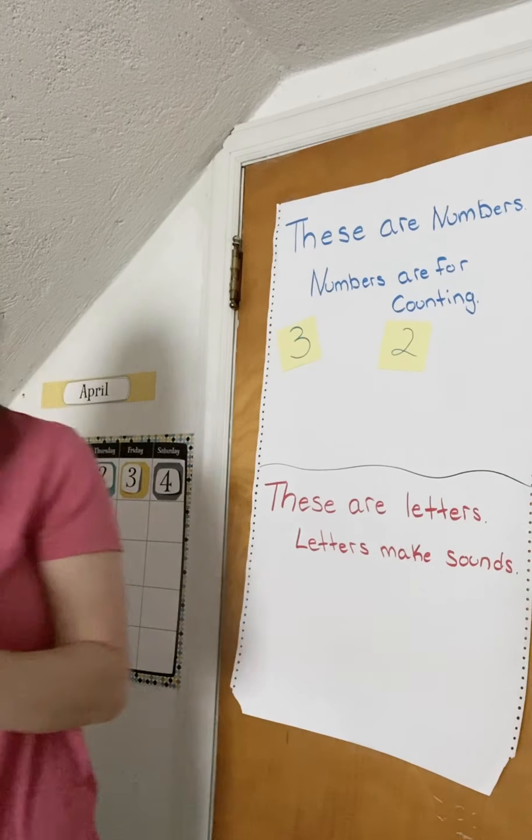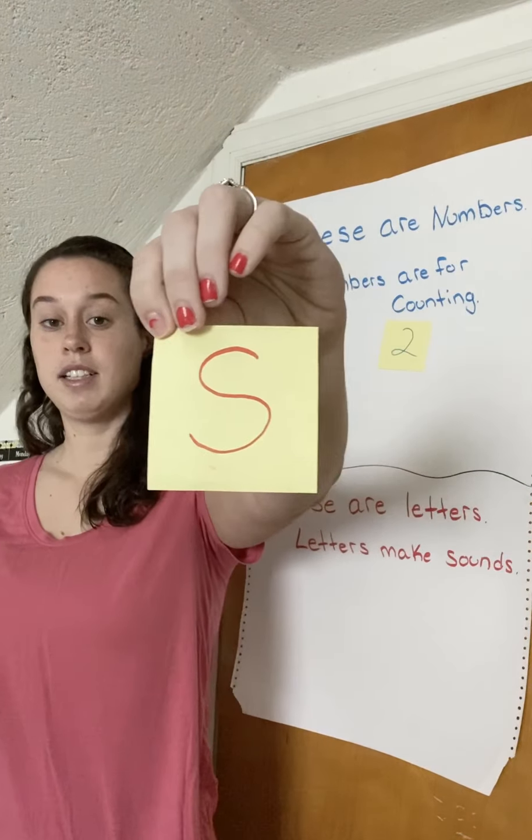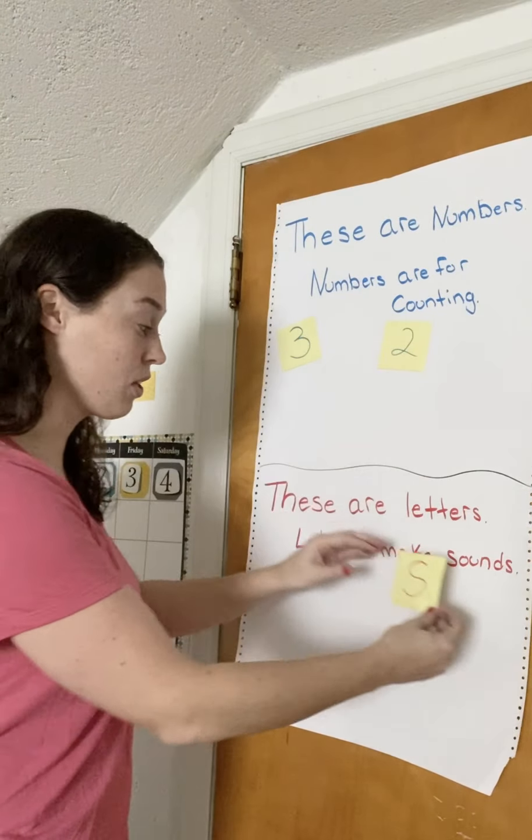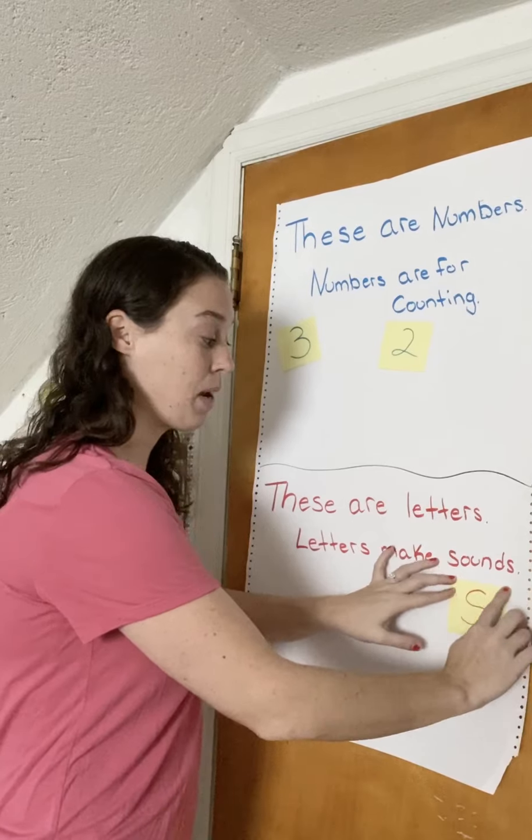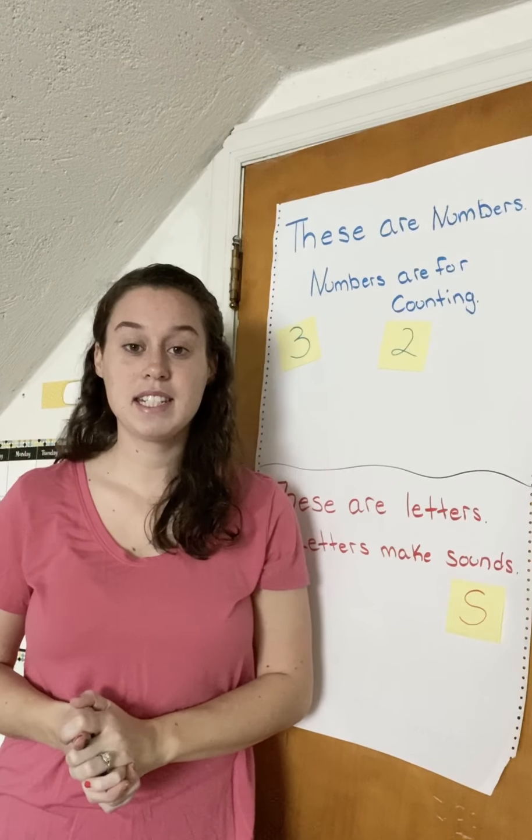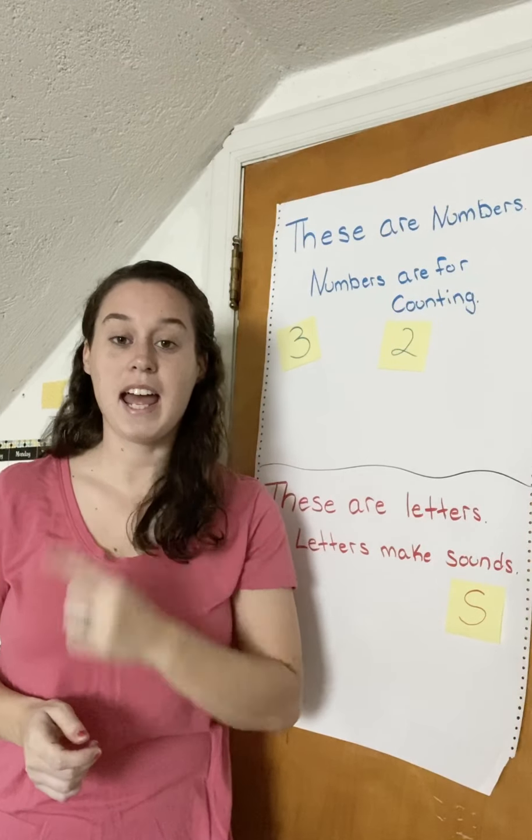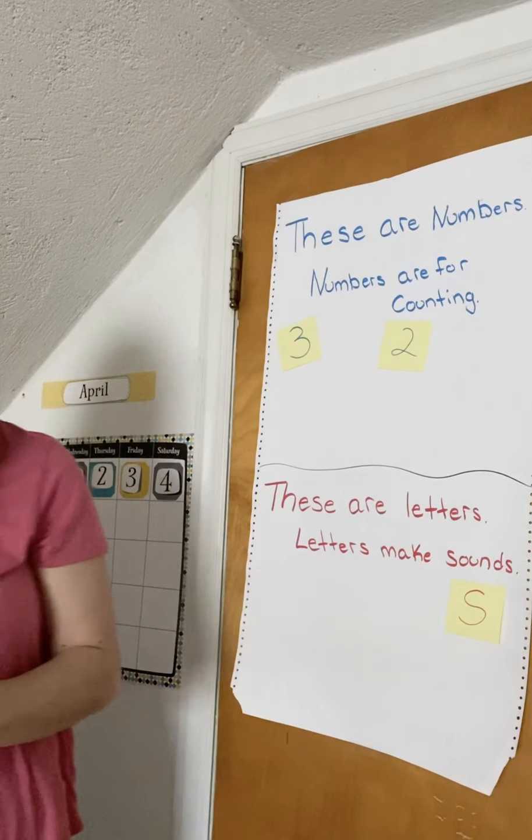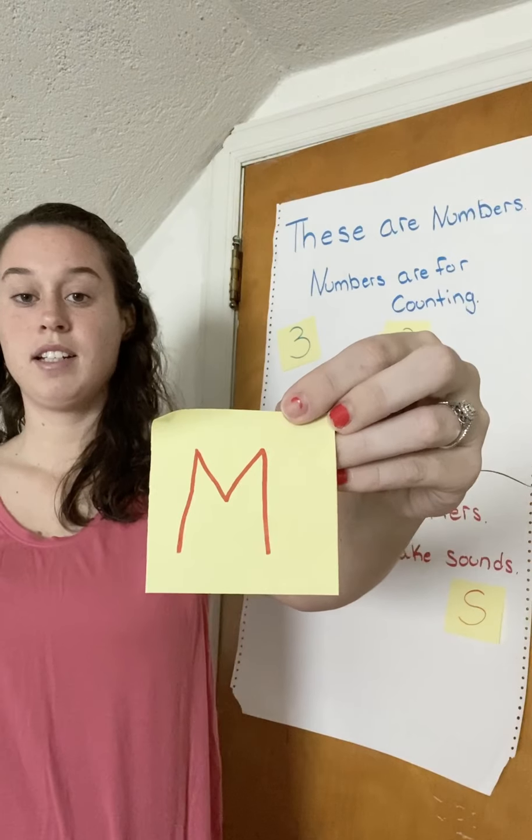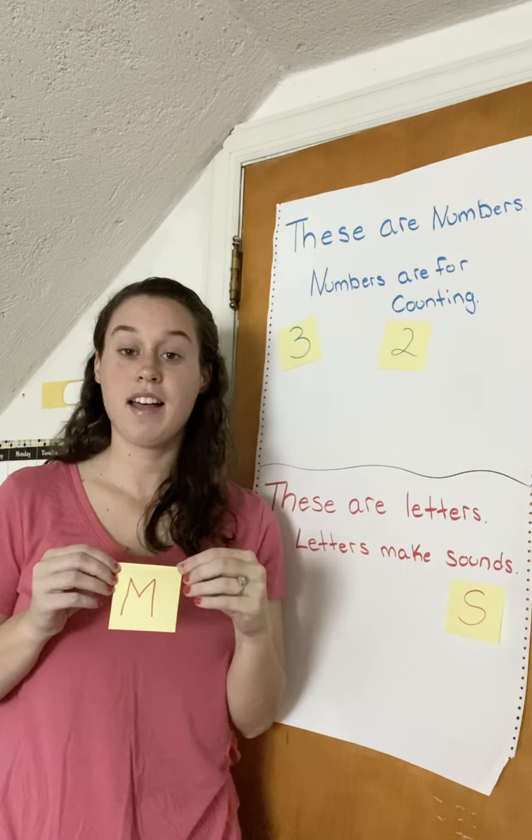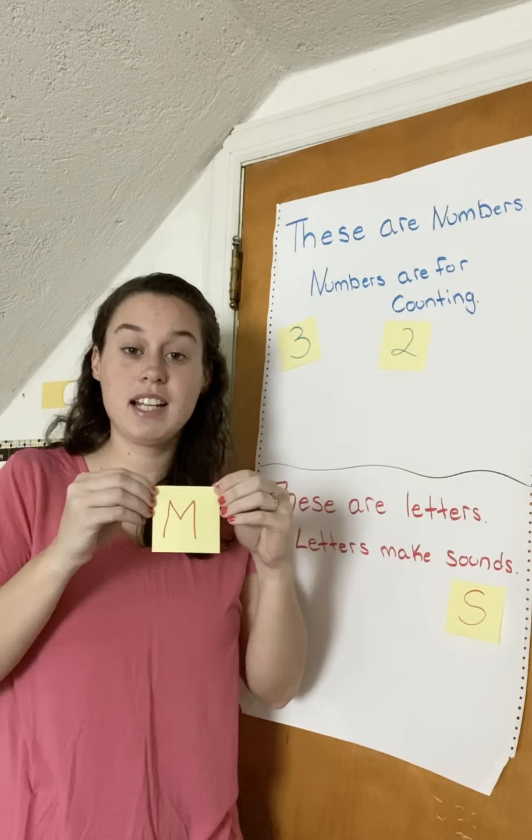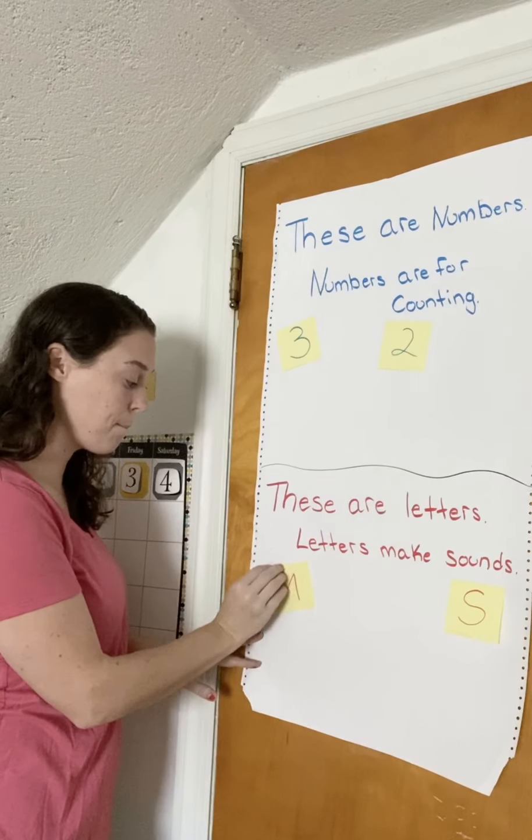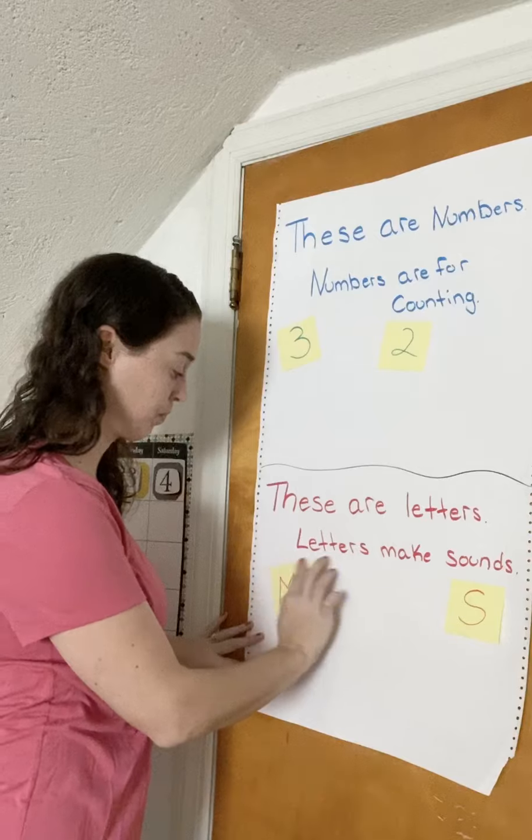All right, we have this. It's a letter. It's the letter S. And we know that the letter S makes the sound ss. All right, we have this. It's a letter, right? It's the letter M. M says mm.